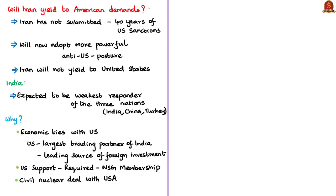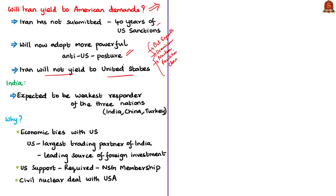On whether Iran will yield to American demands such as cutting oil exports to zero, giving up uranium enrichment rights, and closing all nuclear facilities, the author states that Iran — which has not submitted to unprecedented US sanctions for around 40 years — will now only adopt an even more powerful anti-US posture. This will obstruct the US from realizing its strategic objectives in West Asia.